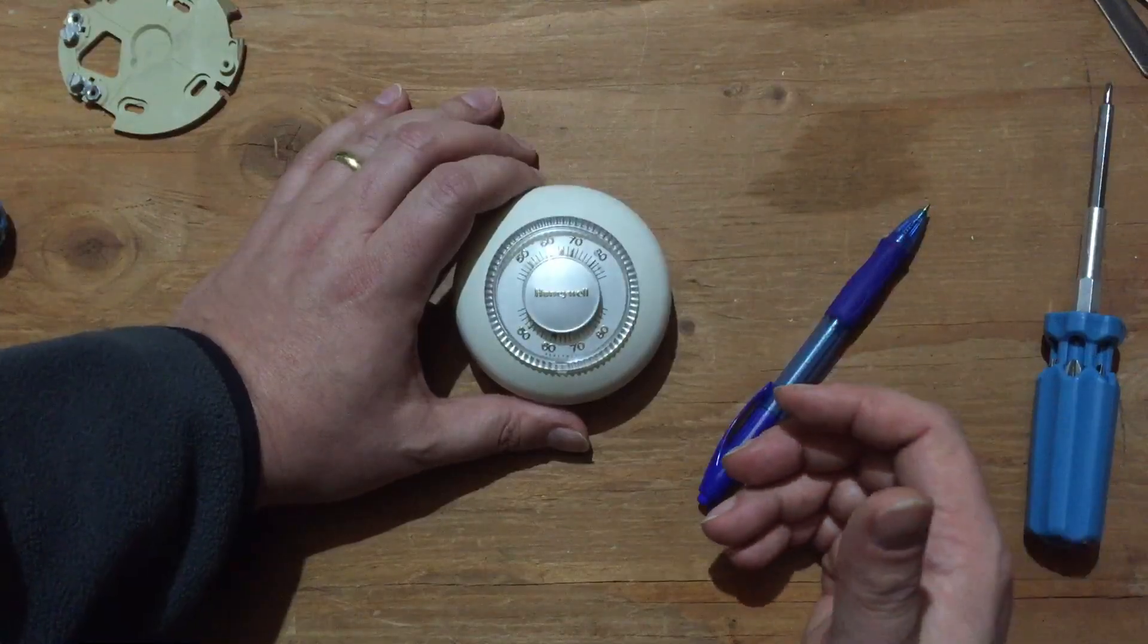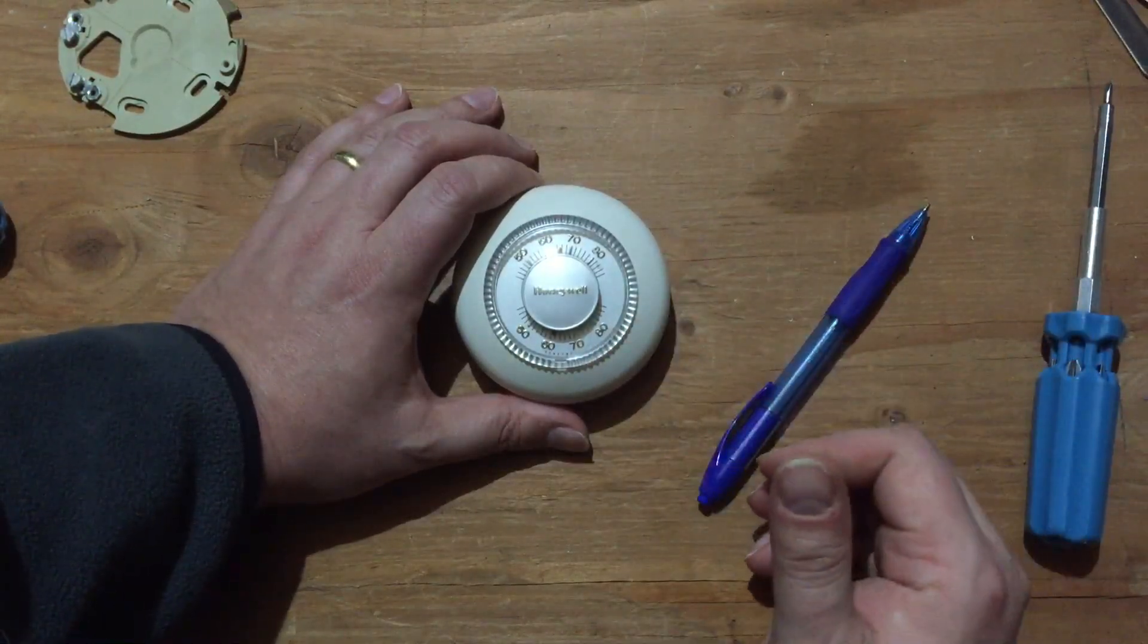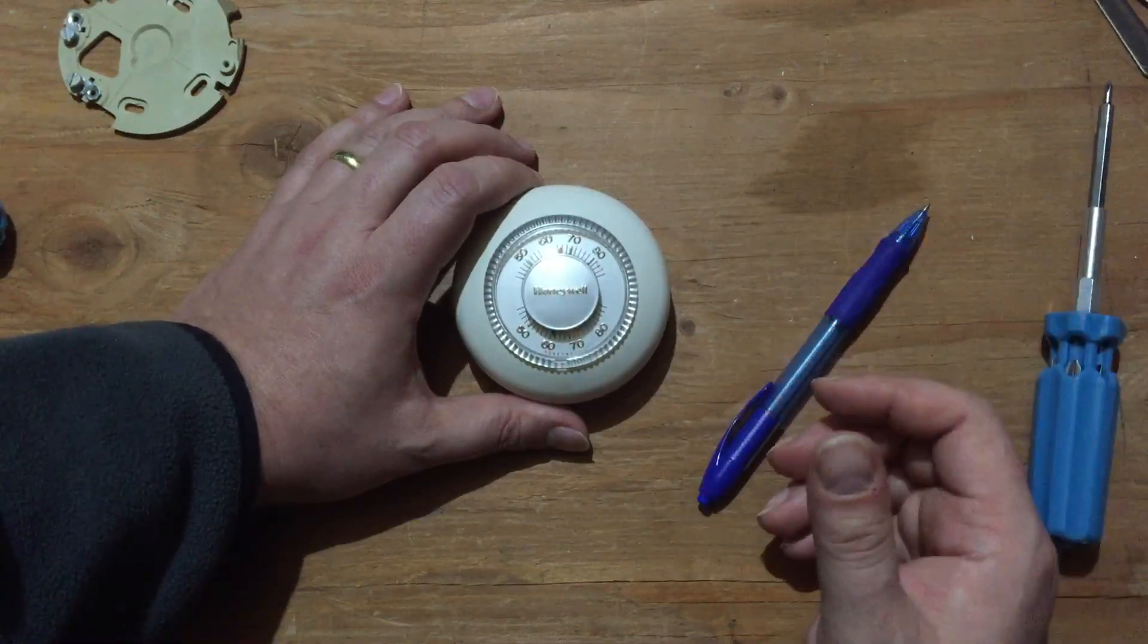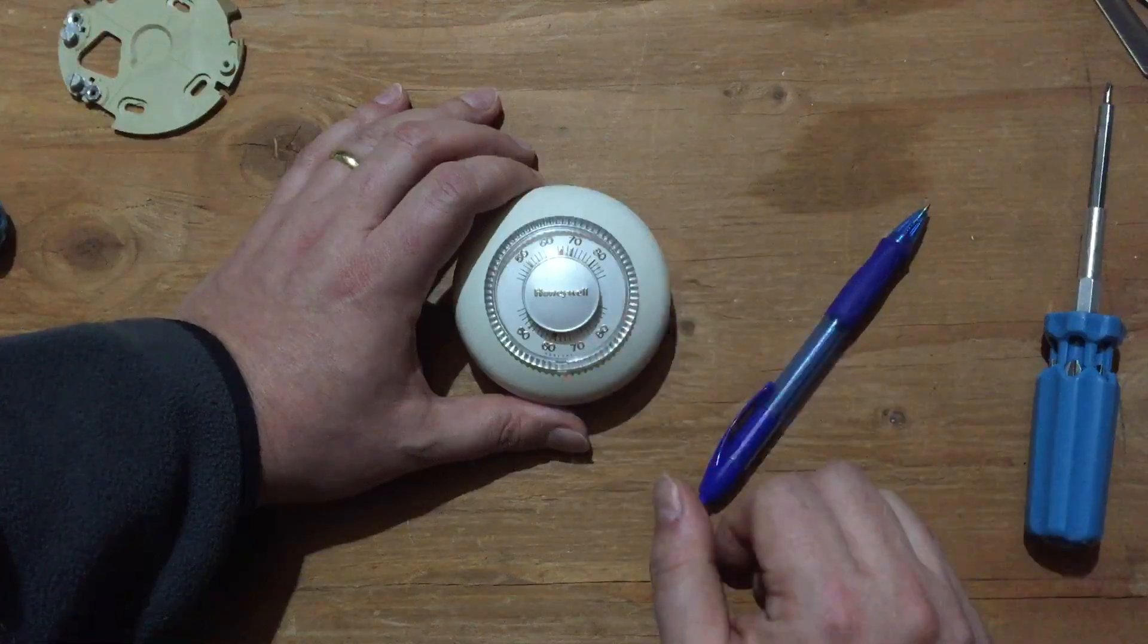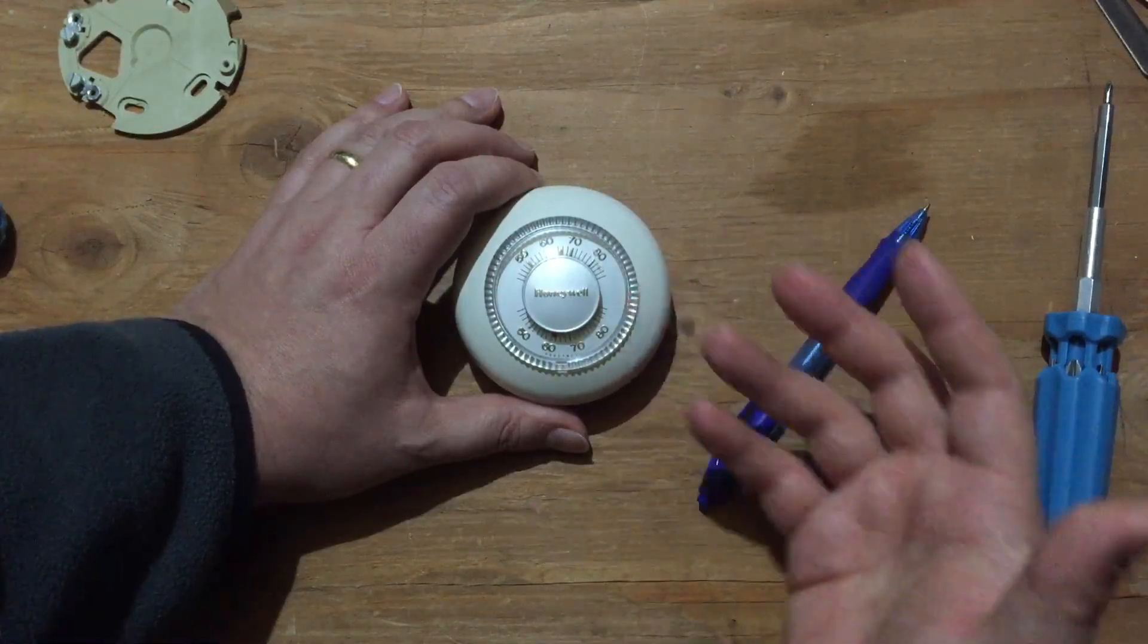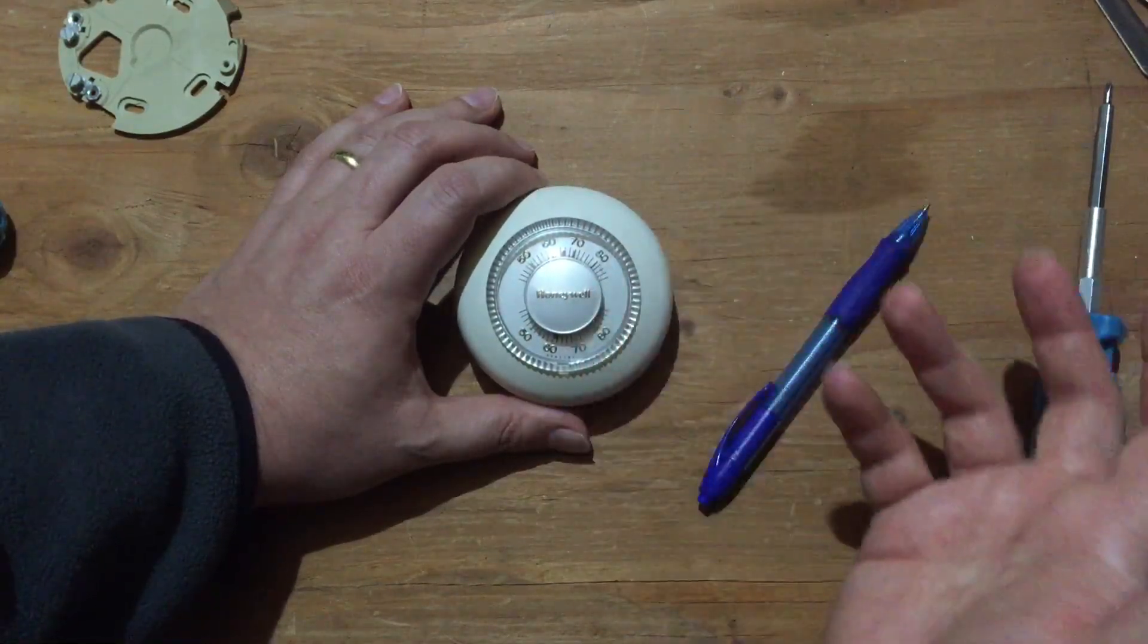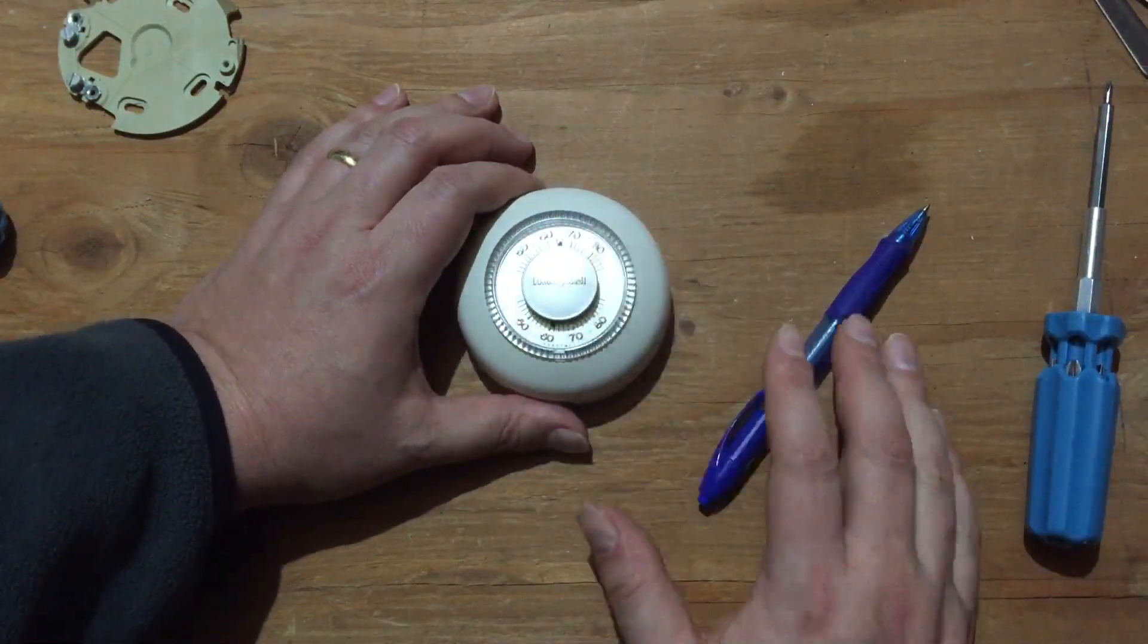And I can't think of many pieces of home electronics, if you consider this that, that have been around for significant fractions of a century, both technically and visually unchanged. So a really successful bit of technology, and also one that is iconic. This is the design that the Nest thermostat is basically kind of alluding to, this classic round design. So I wanted to take a look at how it works.